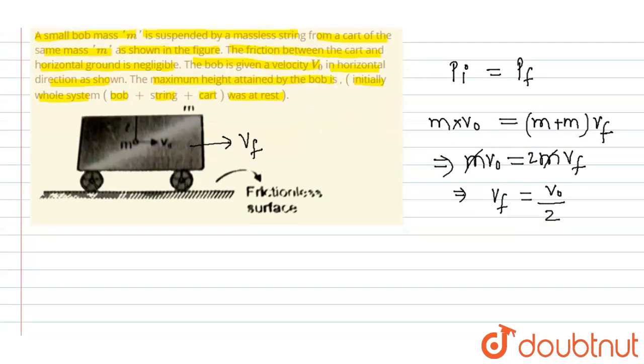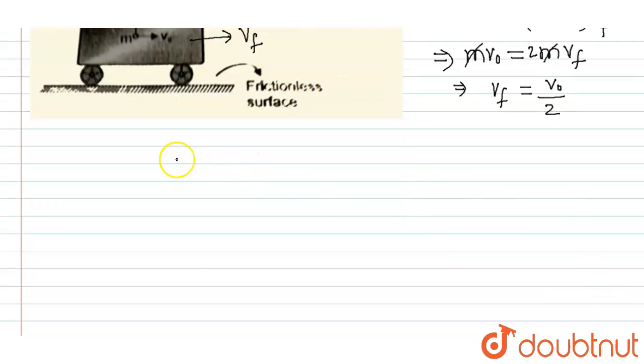Now let's suppose the bob has reached height h. Now applying energy conservation, that is total energy kinetic energy initial equal to total energy final. Kinetic energy initial plus potential energy initial will be equal to kinetic energy final plus potential energy final.